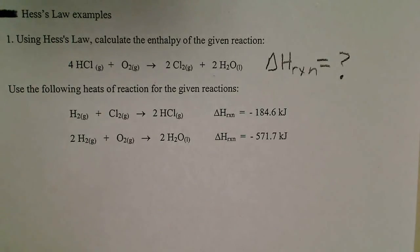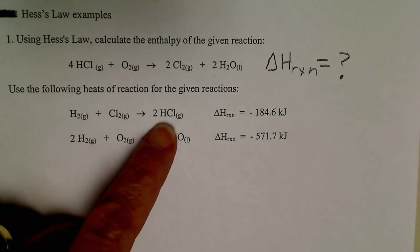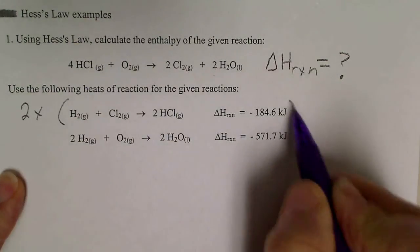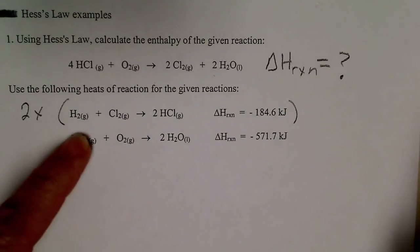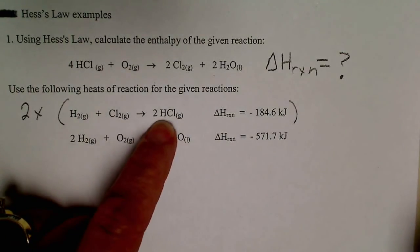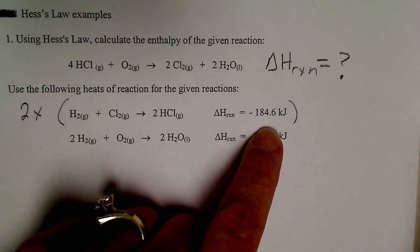So for example, if we double this reaction, so if I take two times this entire reaction, I have twice as much hydrogen, twice as much chlorine gas. I'll make twice as much HCl gas and that will give off twice as much heat. So we're going to use that concept.